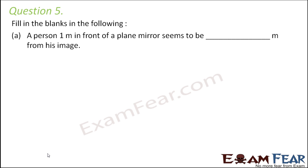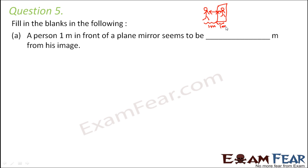Question number five, fill in the blanks: a person one meter in front of a plane mirror seems to be blank meters from his image. The person is in front of the mirror and sees his image behind the mirror. The distance of the object from the mirror equals the distance of the image from the mirror. So if the object is one meter from the mirror, the image is also one meter from the mirror, making the person two meters away from the image. The answer is two.